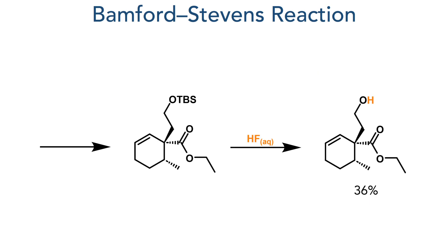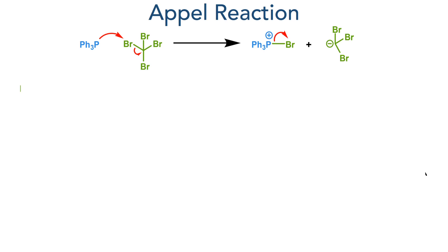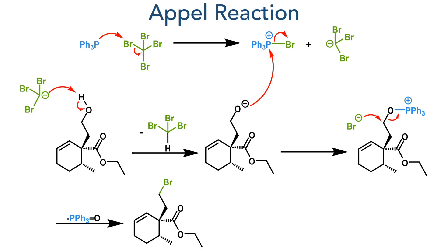The reaction was then quenched and added to a solution of hydrofluoric acid, which deprotected the TBS group, generating the product with a 36% yield. This newly revealed hydroxyl group then took part in an Appel reaction. Carbon tetrabromide is first attacked by triphenylphosphine generating a phosphonium bromide species and a tribromomethyl anion. This deprotonates the hydroxyl group and the resulting alkoxide attacks the triphenylphosphonium bromide, forming an electrophilic intermediate which is then attacked by the bromide, eliminating triphenylphosphine oxide to produce the target alkyl bromide.